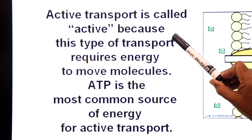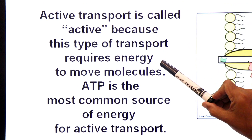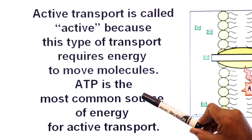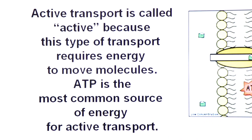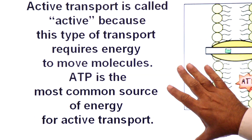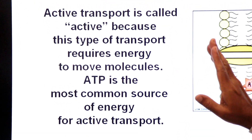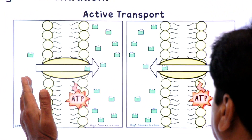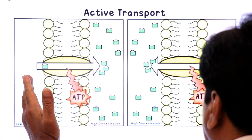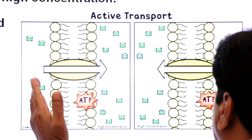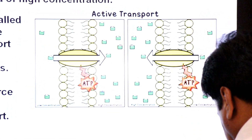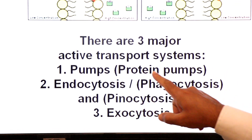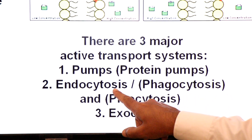Active transport is called active because this type of transport requires energy to move molecules. ATP is the most common source of energy for active transport. When the phosphate bond of ATP breaks, energy is released. This energy is used to pump ions and molecules in or out of the cell.